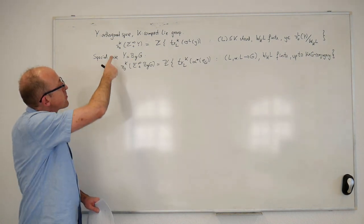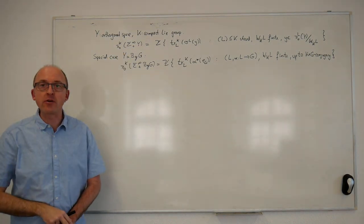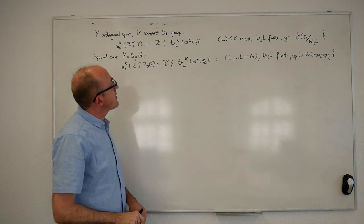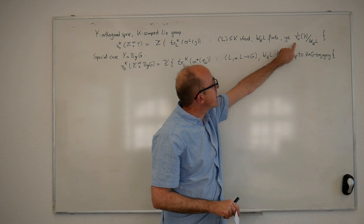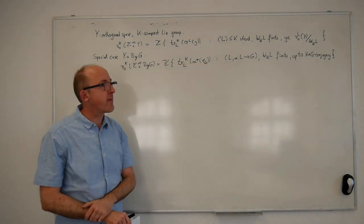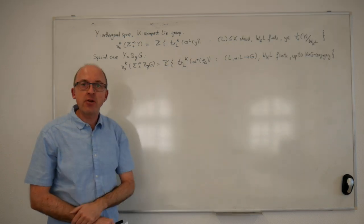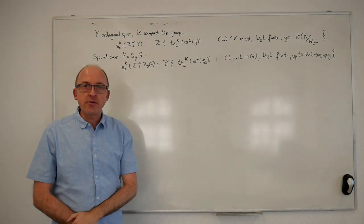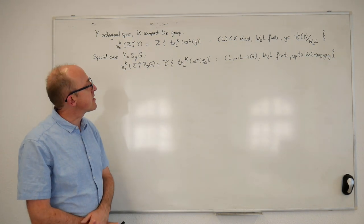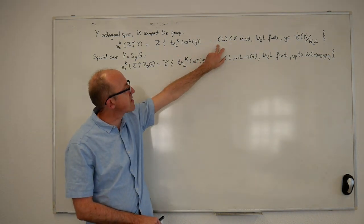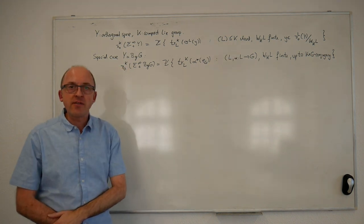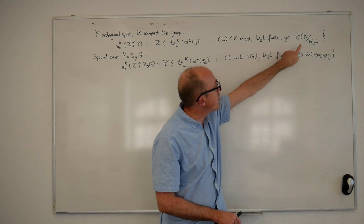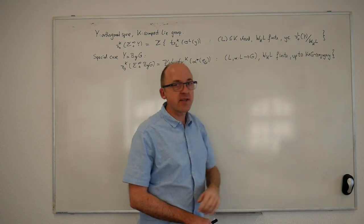Here is the result again. The 0th K-equivariant homotopy group is a free abelian group and we can name a basis. You get a basis by looking at classes Y in the 0th L-equivariant homotopy set of the orthogonal space Y. Then you apply the stabilisation map σ_L, which gets you to the stable equivariant homotopy groups, and then you transfer up from L to K. To actually get a basis without redundancy, these choices should run over conjugacy classes of closed subgroups L of K such that the Weyl group of L in K is finite, and moreover Y should run over representatives of the orbits of the Weyl group acting on this unstable equivariant homotopy set.